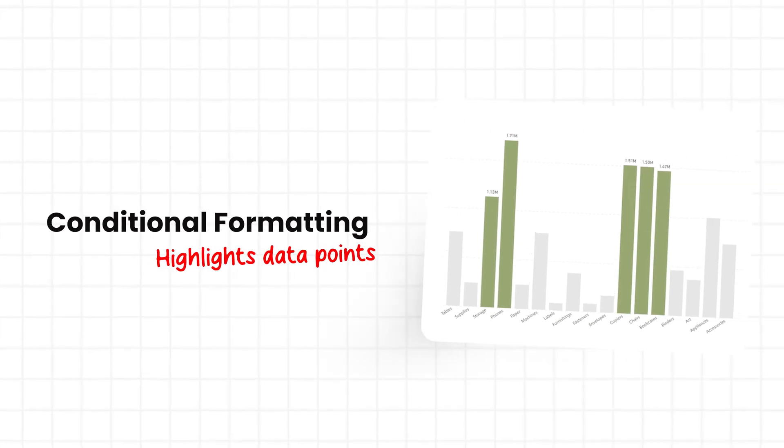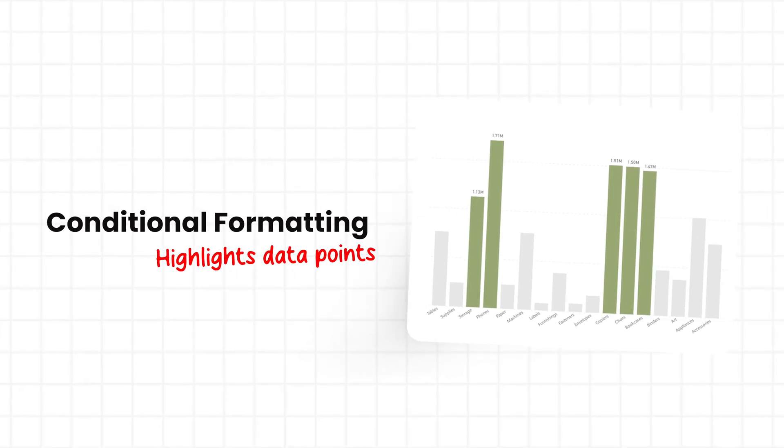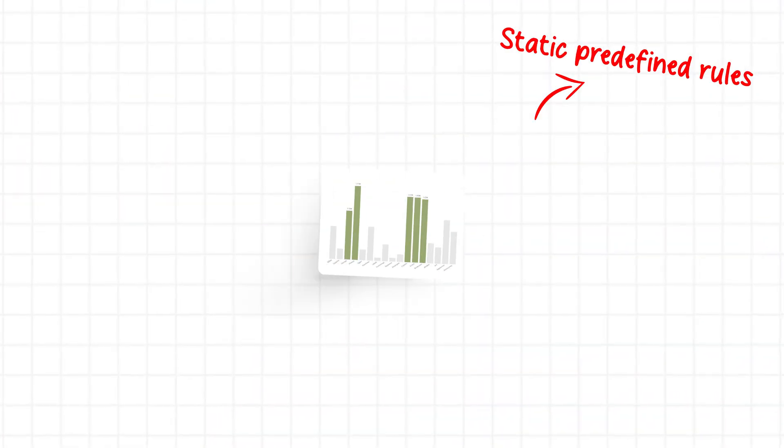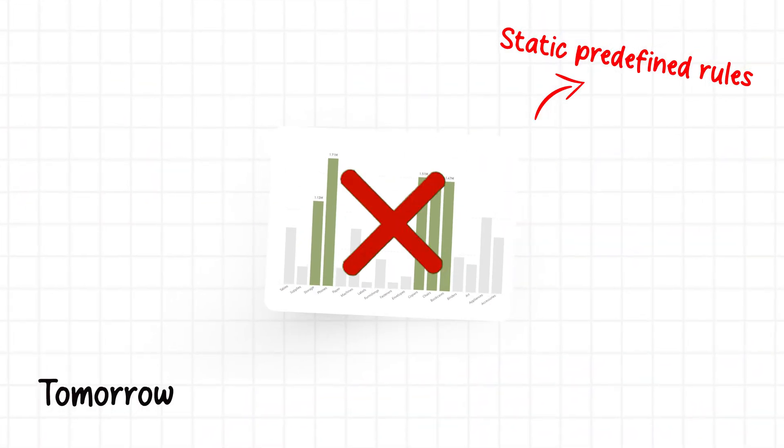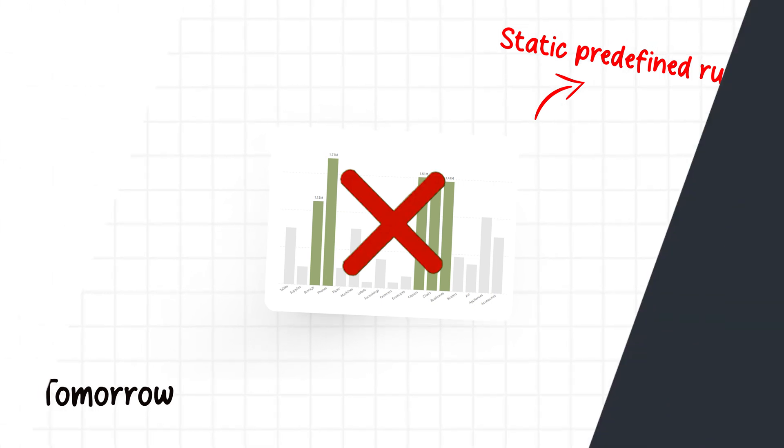Conditional formatting is a fundamental data visualization technique that allows you to present and highlight the information your users need to see. But here's the problem — this is often done in a very static way, where once you've defined the rules, that's essentially what your users see. The problem is your users today need to look at the top five, but tomorrow they need to investigate the bottom three.